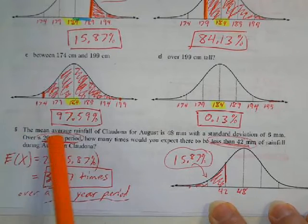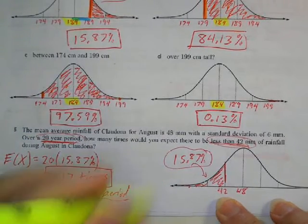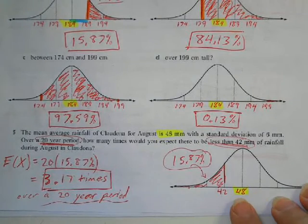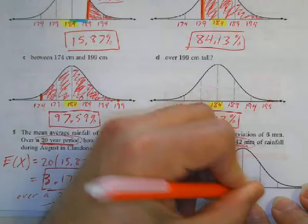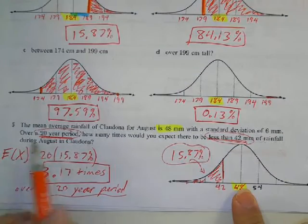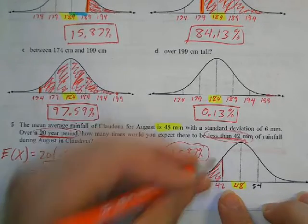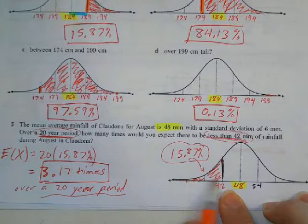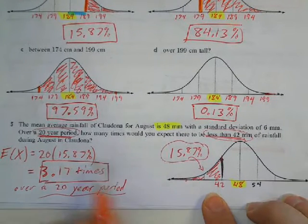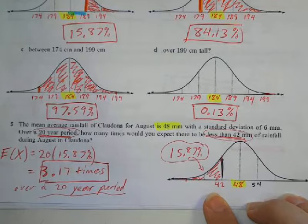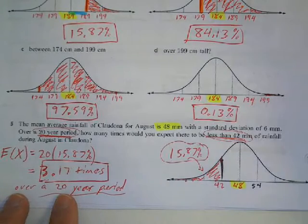Question five: the mean is 48 millimeters and the standard deviation is 6. I write the standard deviations on the curve — for example, one above is 54. For rain less than 42 millimeters over a 20-year period: 42 is one standard deviation below the mean. The percentage below that value is 15.87%. Multiplying 15.87% by 20 years gives approximately 3.17 times — so we'd expect rainfall below 42mm about 3.17 times over 20 years.